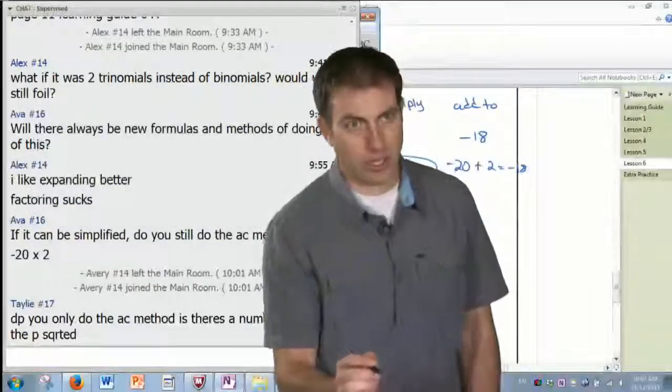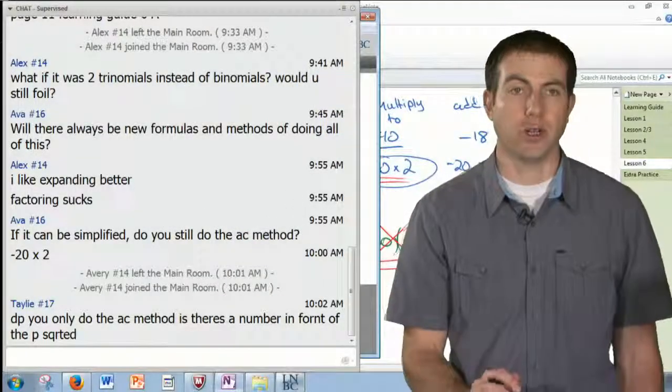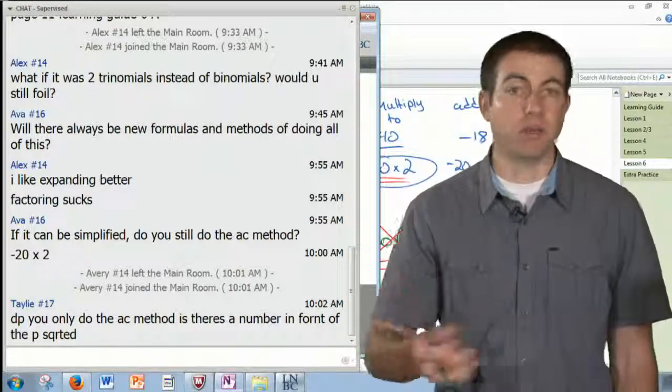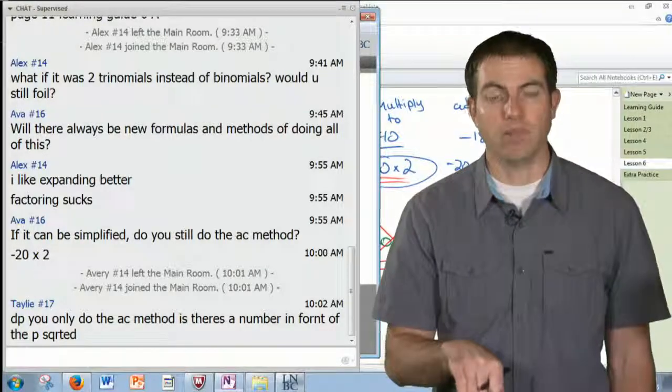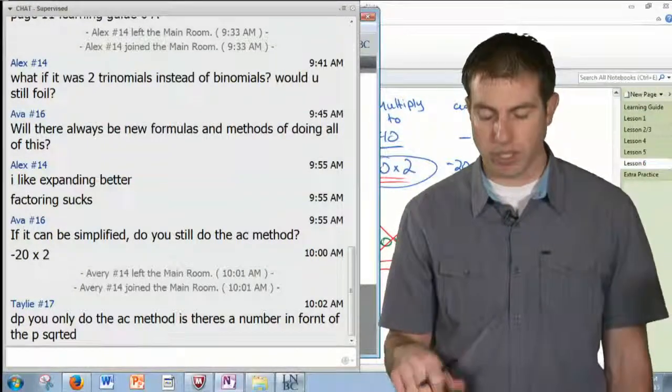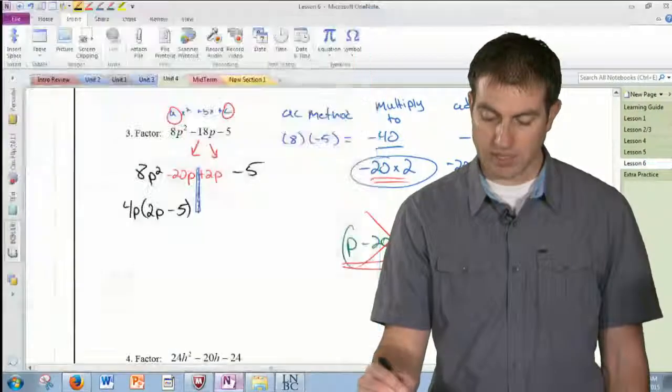So Taylor asked a question here. Do you only do the AC method if there's a number in front of the P squared term? Yes, that's right. And it doesn't have to be a P. It can be any letter. But if there's a number in front that's not 1, then you have to use the method we're using right now. If you have a number that is 1, then you can do the way we did last day, just the quick way.